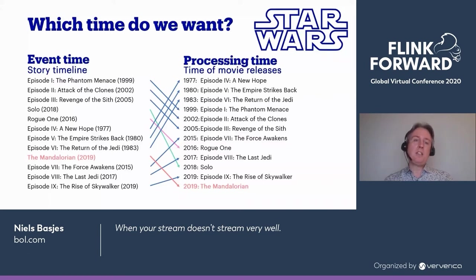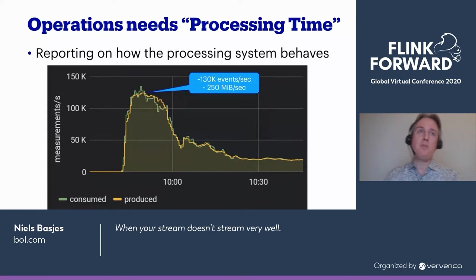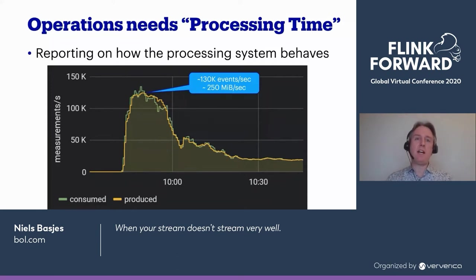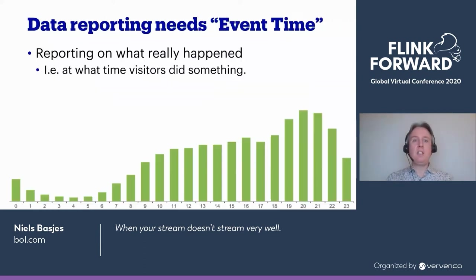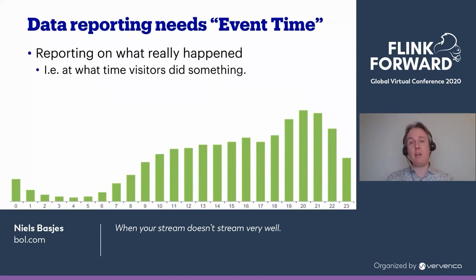Sometimes you need processing time — for example in operations, where you really want to know how the system is behaving right now. But in most business use cases, you really want event time because you're going to report on what happened on the website. When did a visitor do something? I don't care when it was processed. So we want to do a group by event time in our example.